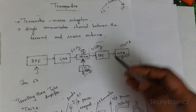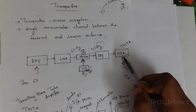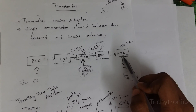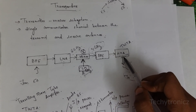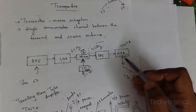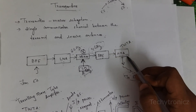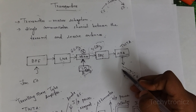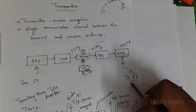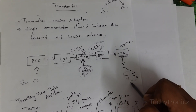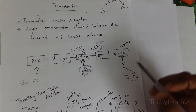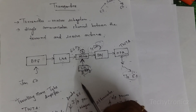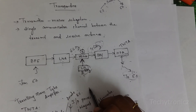The bandpass filter gives the signal to the high power amplifier. The high power amplifier strengthens or amplifies the signal and gives it to the receiver side of the earth station. This is the basic block diagram of the satellite transponder.